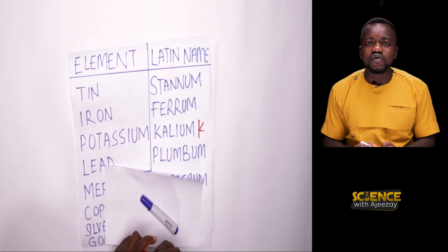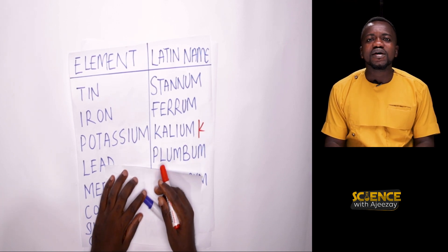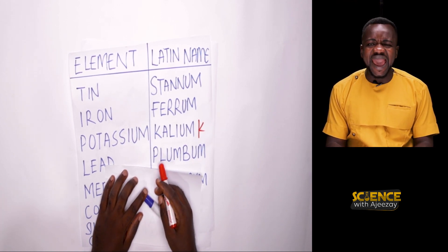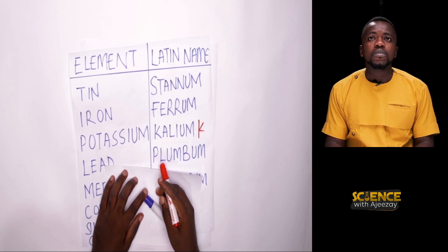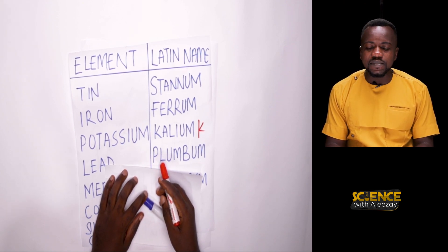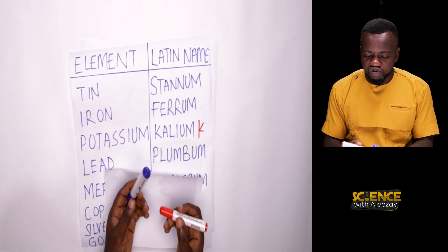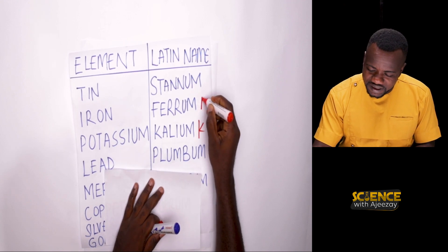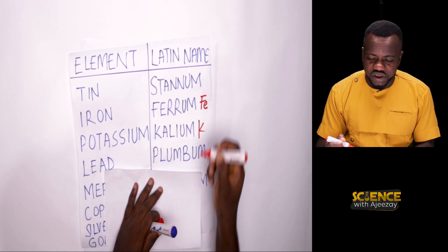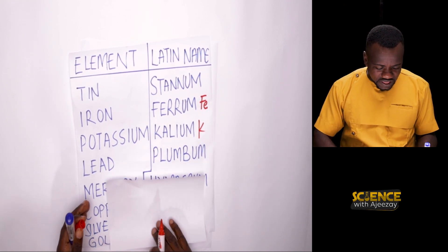If you come to iron, iron should have been, let's say, I or IR. No. Iron was named after the Latin name. The Latin name of iron is Ferrum. So iron is Fe.